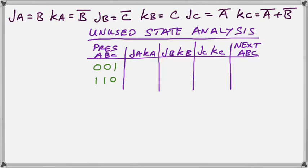So the next thing to do, we've written the input functions that we've calculated there on the top in black. And we're going to prepare an unused state analysis table. Notice that we've got the present state listed as the two unused states. And we're now going to populate the input functions and see what the next state is going to be based on our input functions shown.